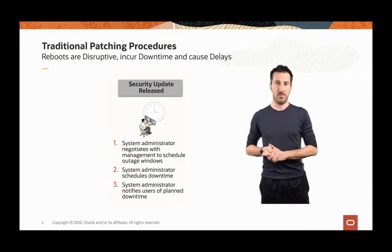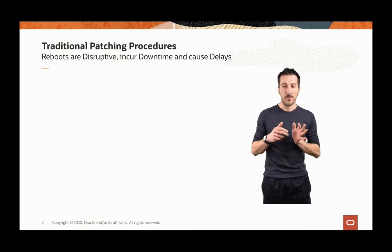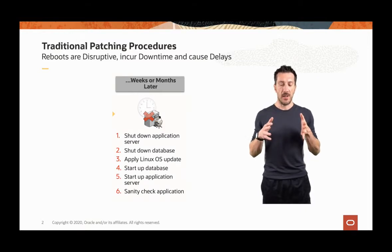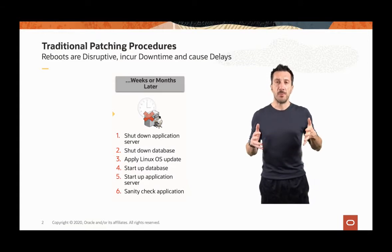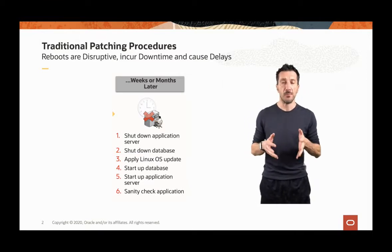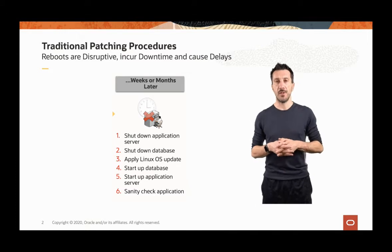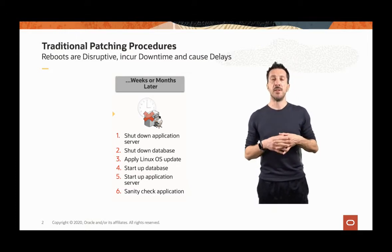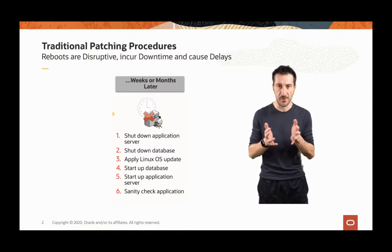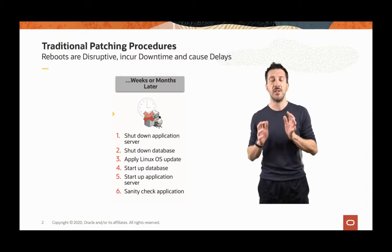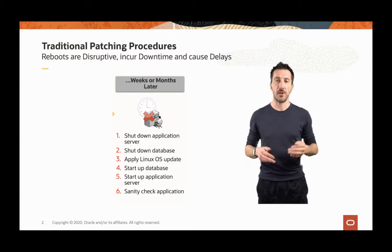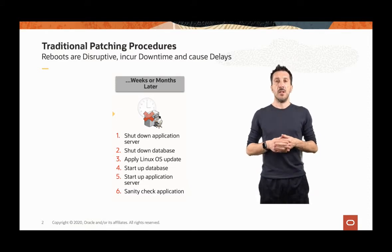And this is just the first step. When we move to the second step, so weeks or even months later, the system administrator has already involved all the possible teams — for example, the application team or the database team — that are required to collaborate and work together on the possible downtime for the service. Only at that point will the application team manage the application layer, so all application services will be taken down. The same thing will happen for the database side, and then the system administrators will have the opportunity to install the security fixes on the operating system.